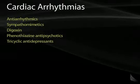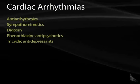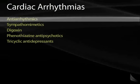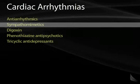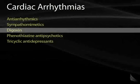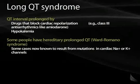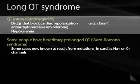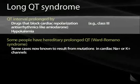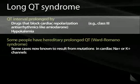Cardiac arrhythmias — ironically, the medications you are more likely to see arrhythmias with are antiarrhythmics themselves. Also, patients receiving sympathomimetics such as amphetamines, digoxin, phenothiazine antipsychotics, and tricyclic antidepressants. Specifically, long QT syndrome is a disease that is very dangerous. QT intervals are prolonged by multiple situations and medications. Medications such as amiodarone that block cardiac repolarization can prolong the QT.